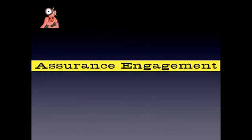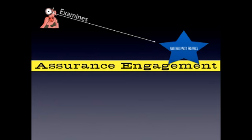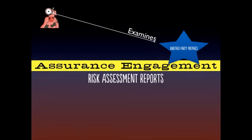Alright everyone, on to assurance engagements. Learn the things that make up an assurance engagement. The first thing is that somebody else prepares it, so another party prepares whatever it is that somebody is going to examine. It's when somebody is responsible for examining what another party prepares.